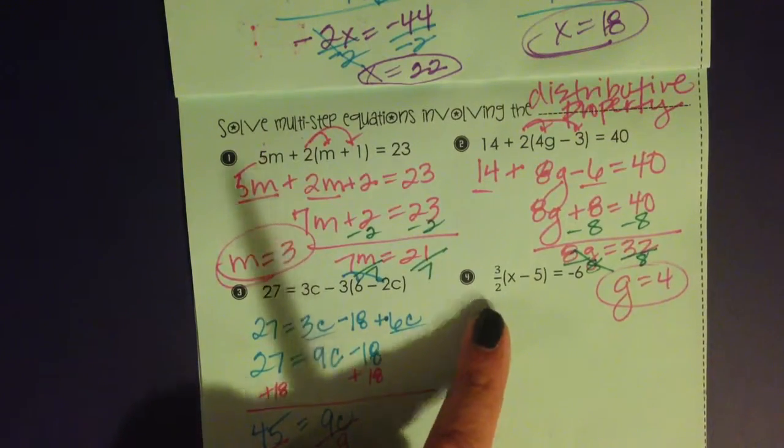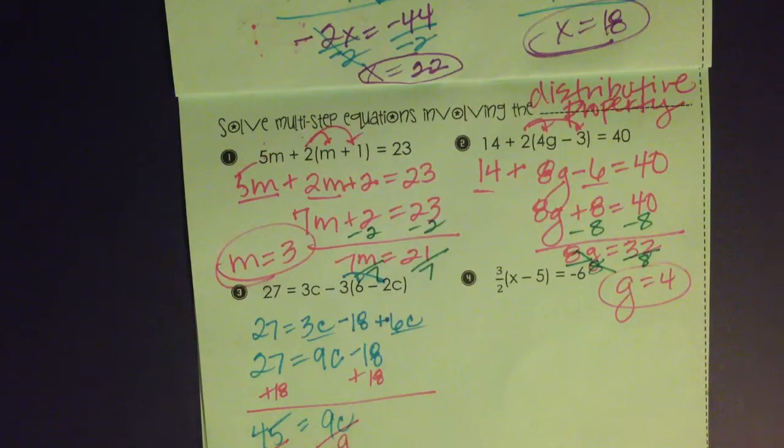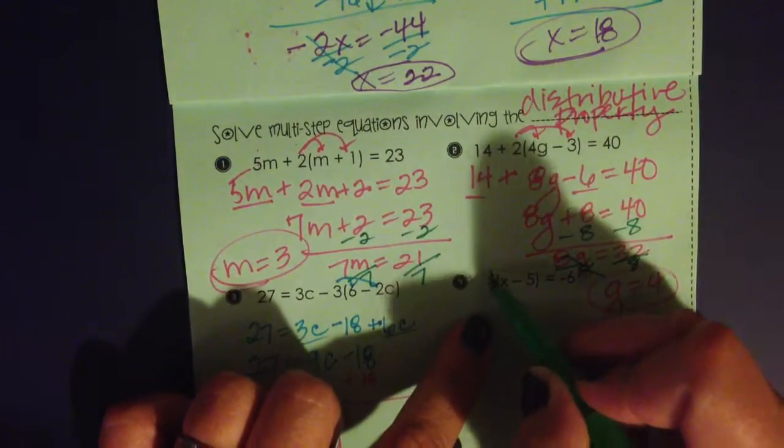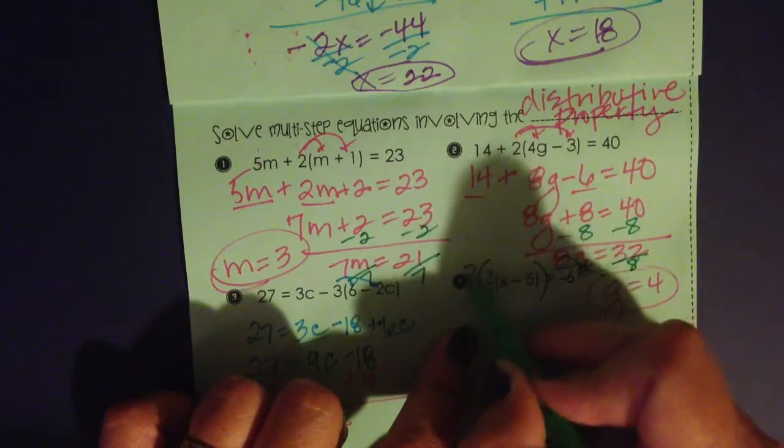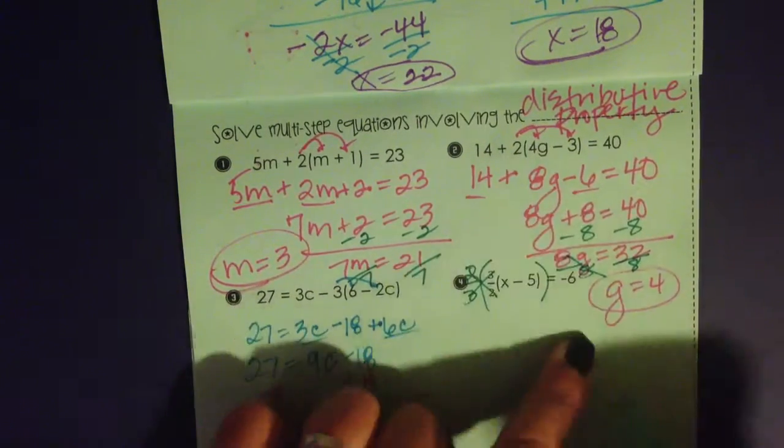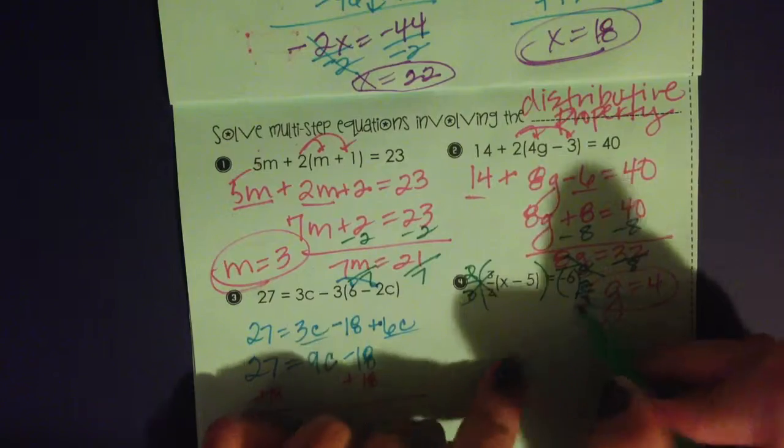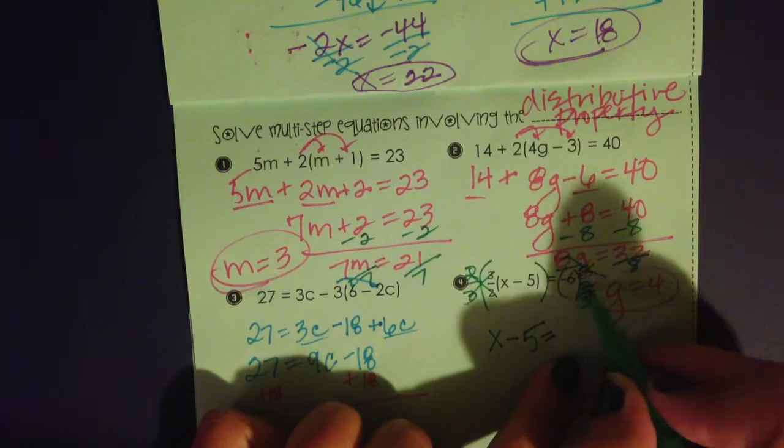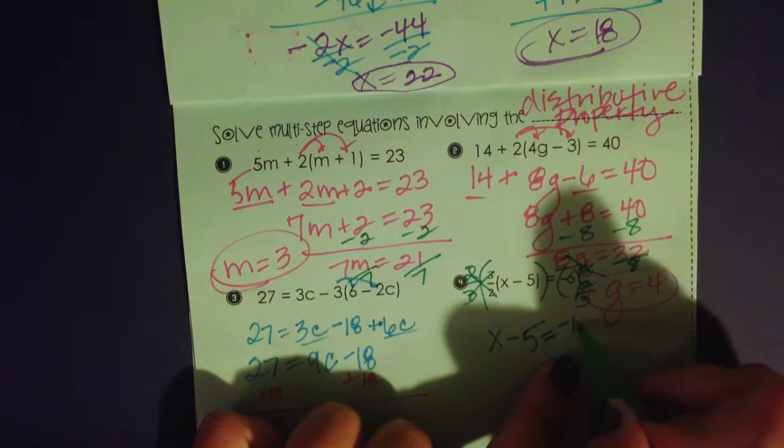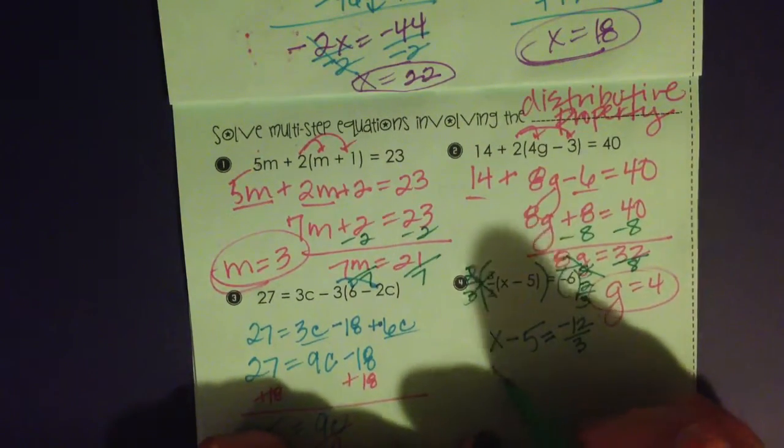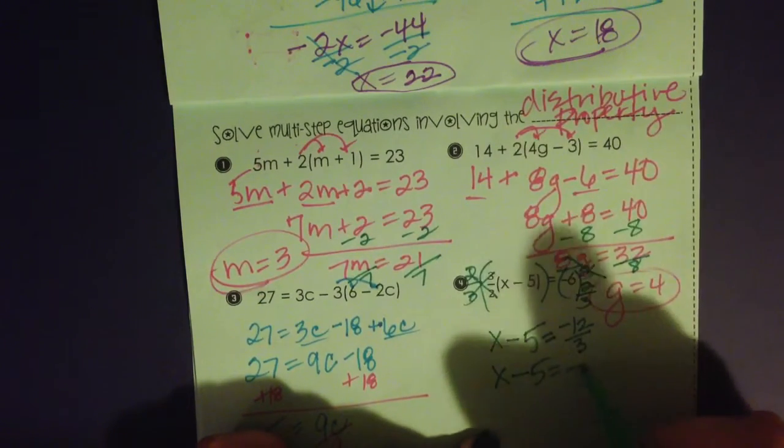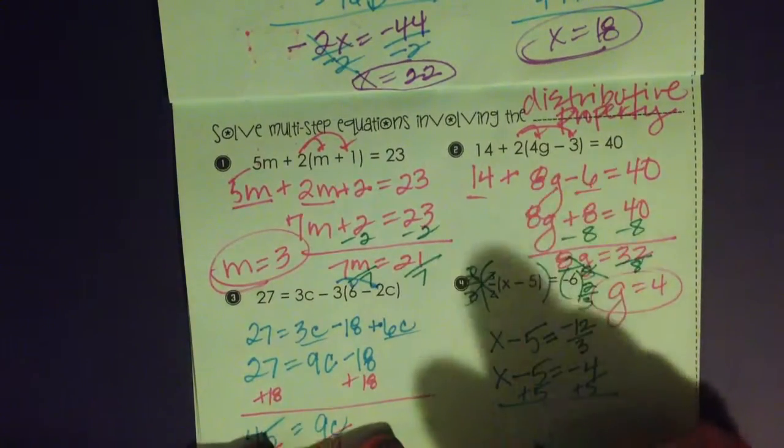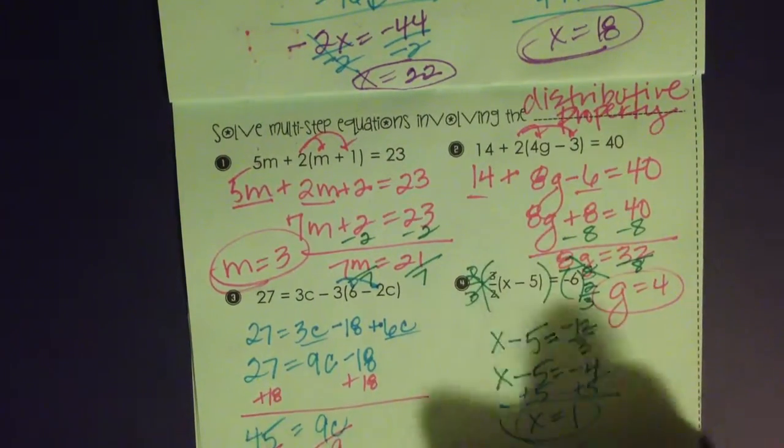Number 4. This is interesting. I'd like to handle this problem by multiplying both sides of the equation by the reciprocal of 3 halves, like we looked at in the one steps. I want to get this out of here. So if I multiply everything by 2 thirds, this will cancel out. And negative 6 times 2 thirds is going to leave me with x minus 5 equals negative 12 over 3, as I simplify. So x minus 5 equals negative 4. I'd add 5, x is 1.